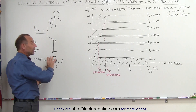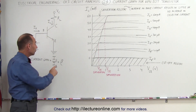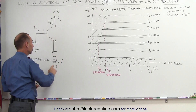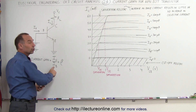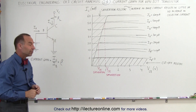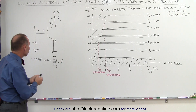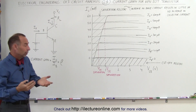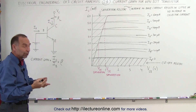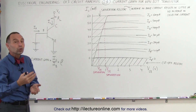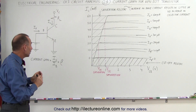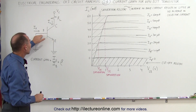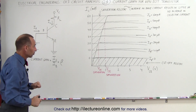The ratio of the current to the collector divided by the current from the base is called the current gain, and typically it's anywhere from 10, 20, 50, or 100 to 200. So we can have quite a bit of gain between the base current and the collector current.